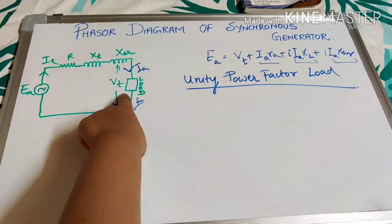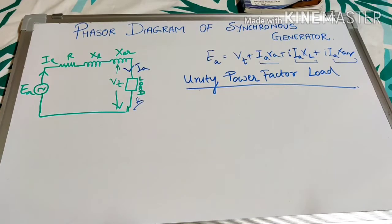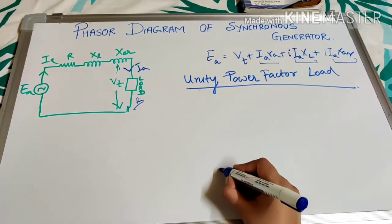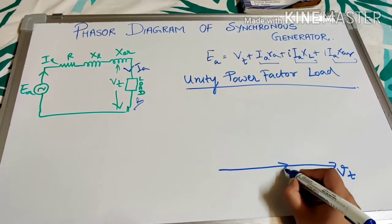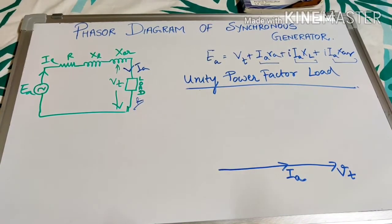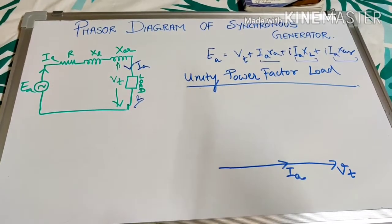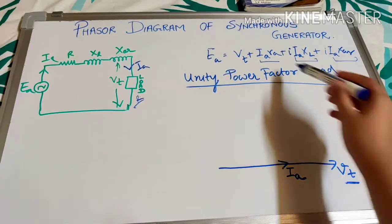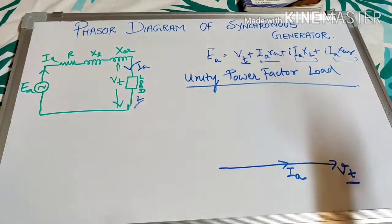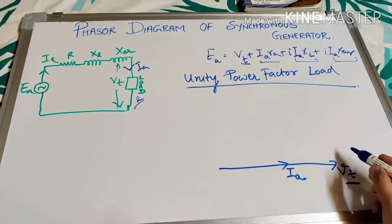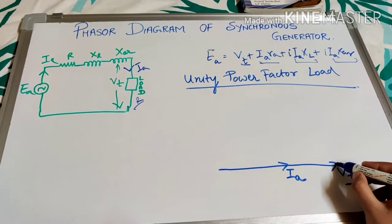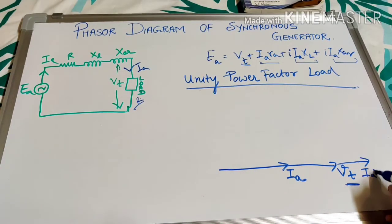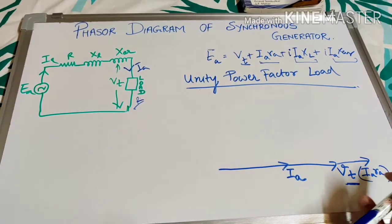Since the load is resistive, terminal voltage Vt and load current Ia are both in the same direction. We draw a straight line for terminal voltage Vt, and since there is no phase difference, the armature current Ia is also drawn in the same direction. Now we add the voltage drops: IaRa is added directly in the current direction.